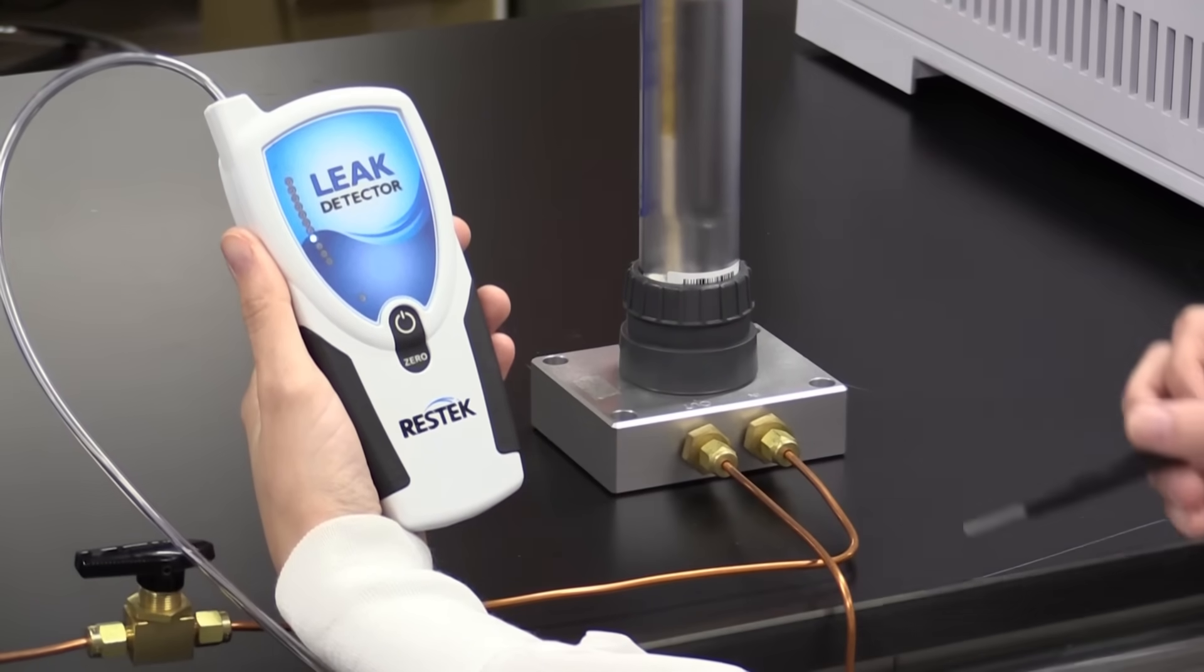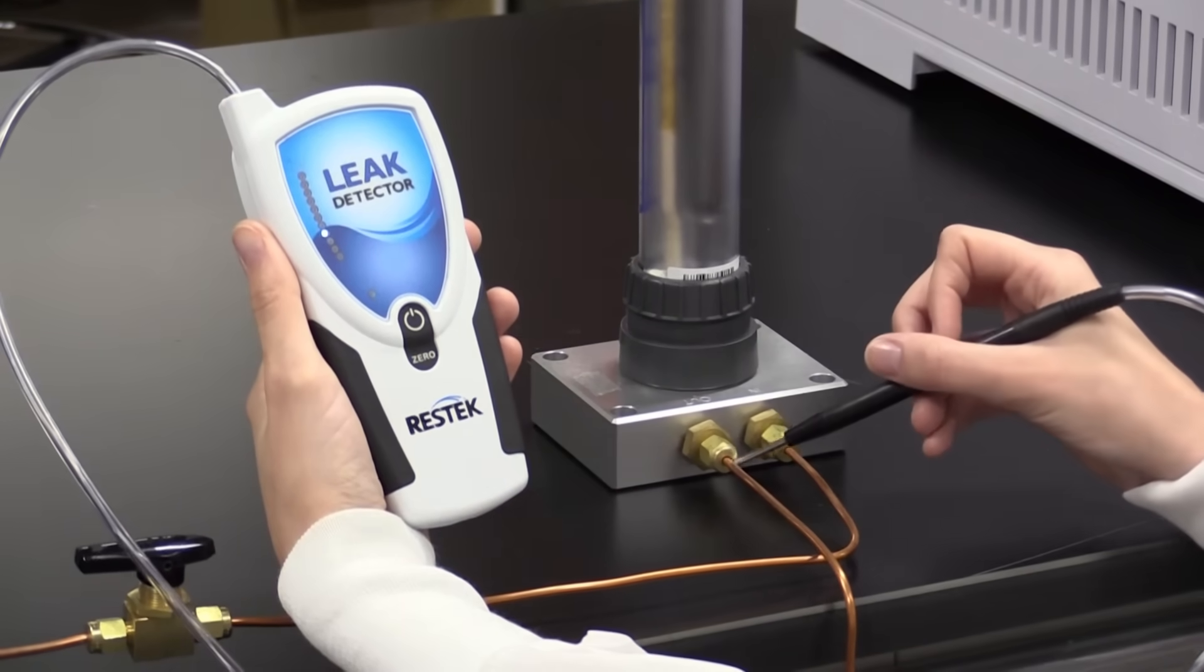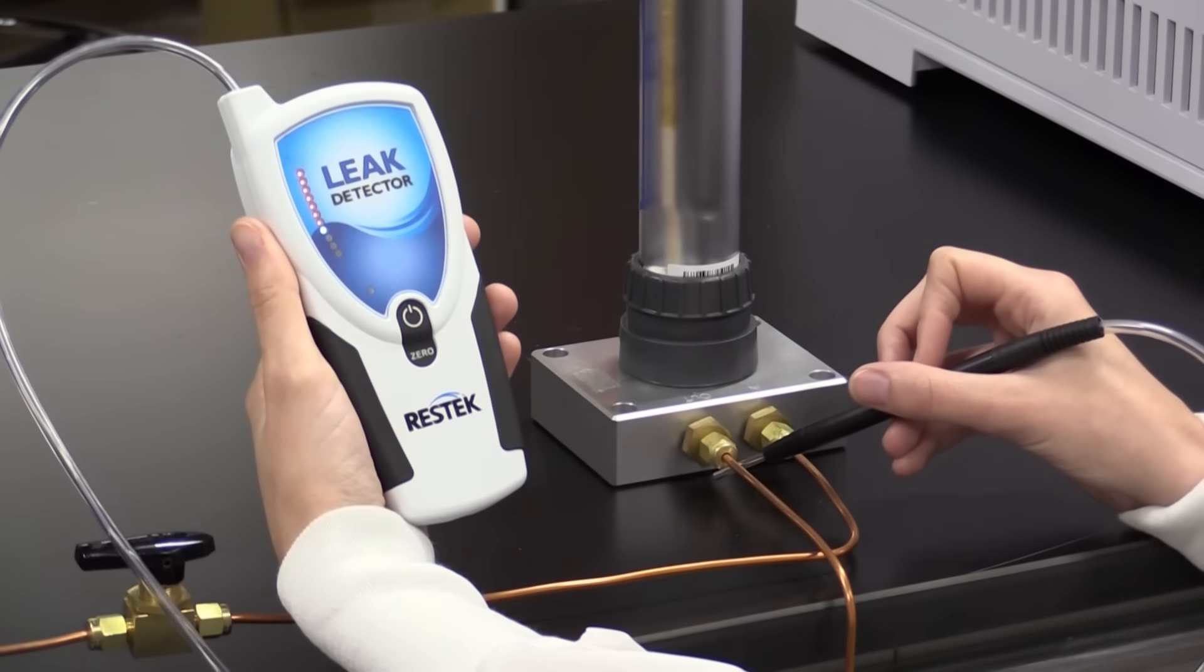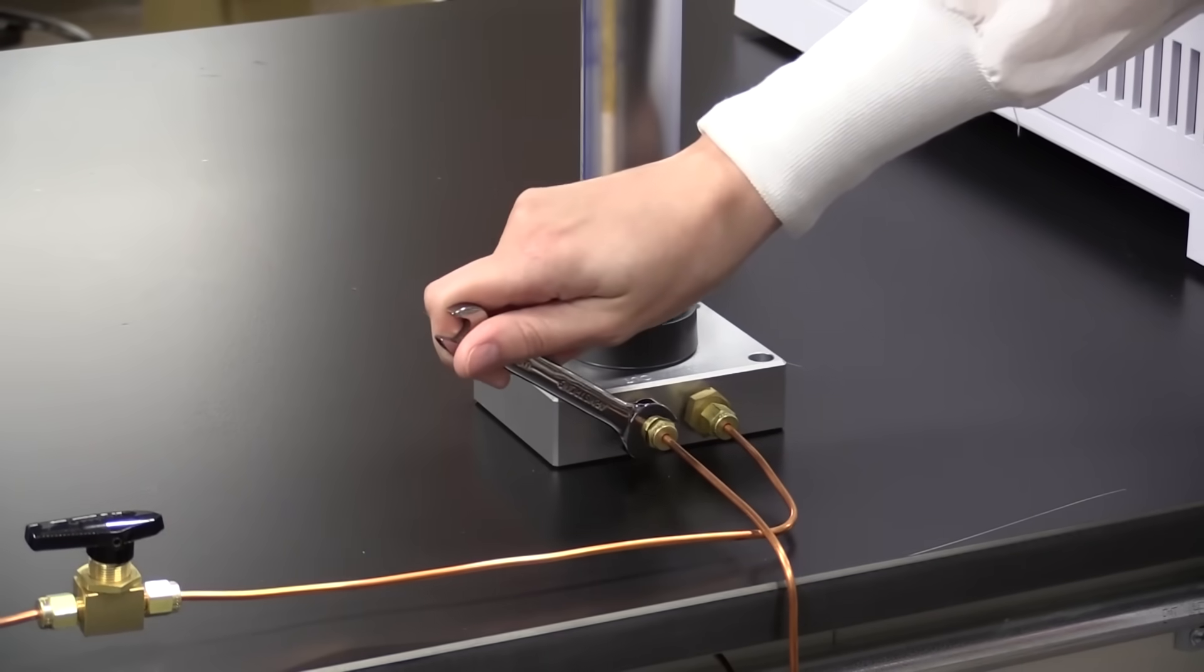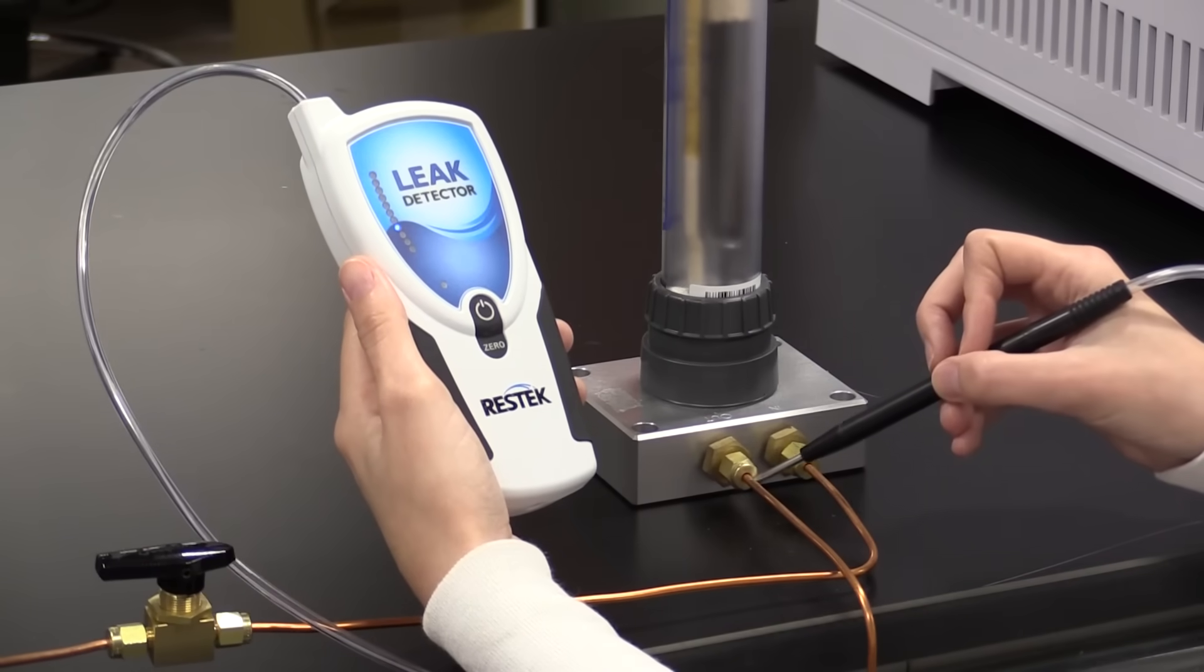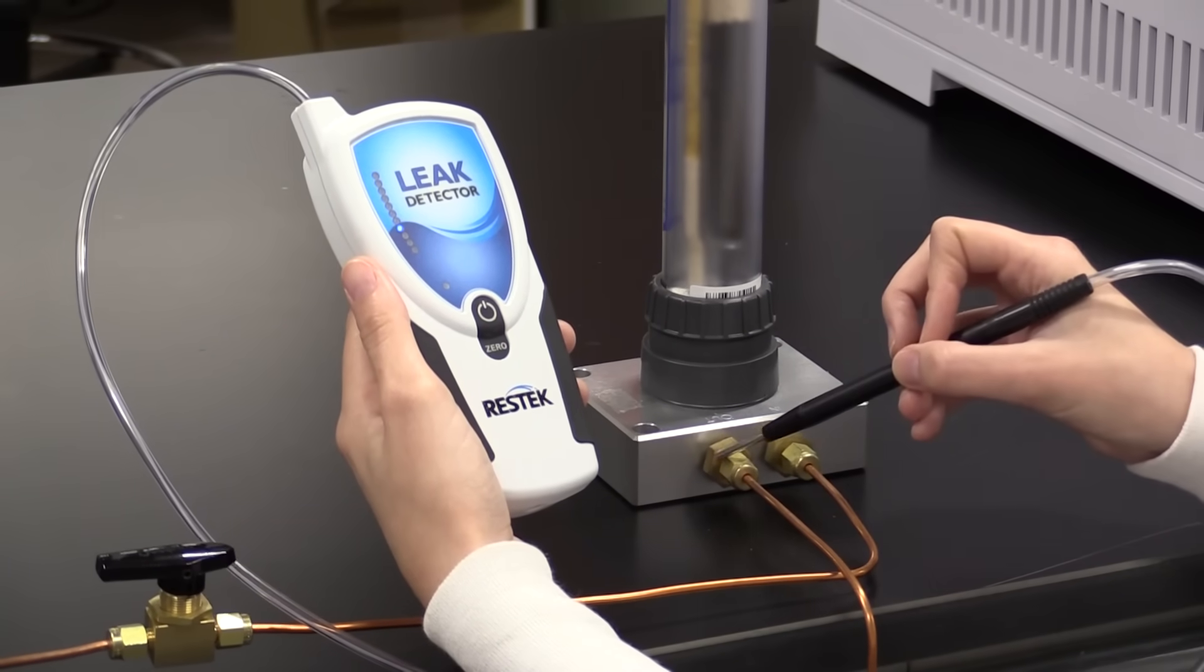Check for leaks any time you install new or replacement gas filters. If one of your gas filter compression fittings is leaking, check the fitting to make sure it's in good condition, then tighten it appropriately. Afterwards, continue to routinely check around seals and fittings.